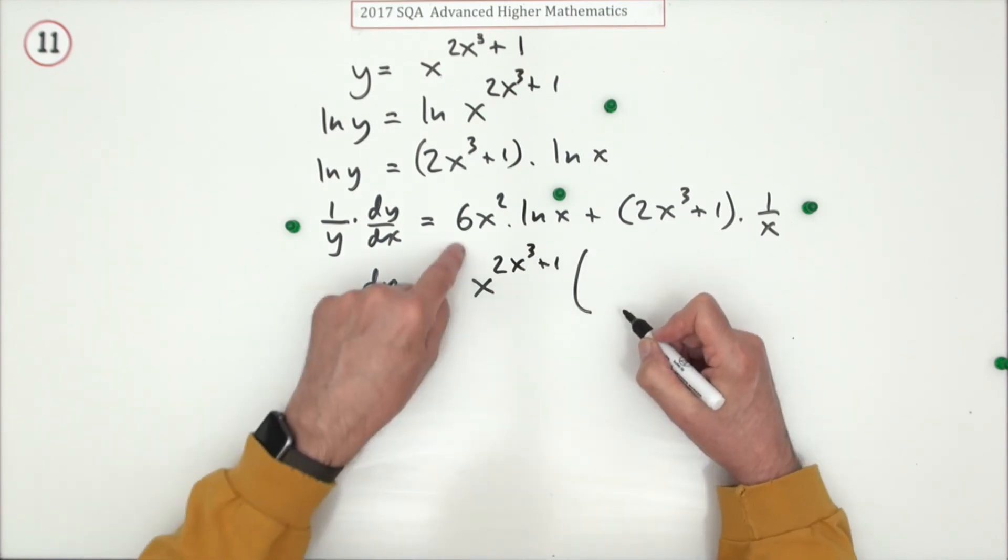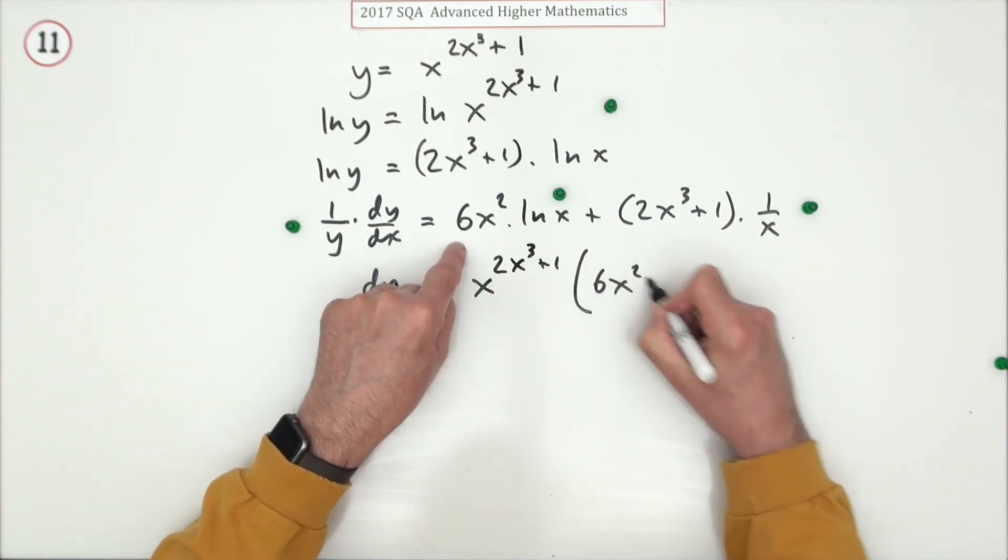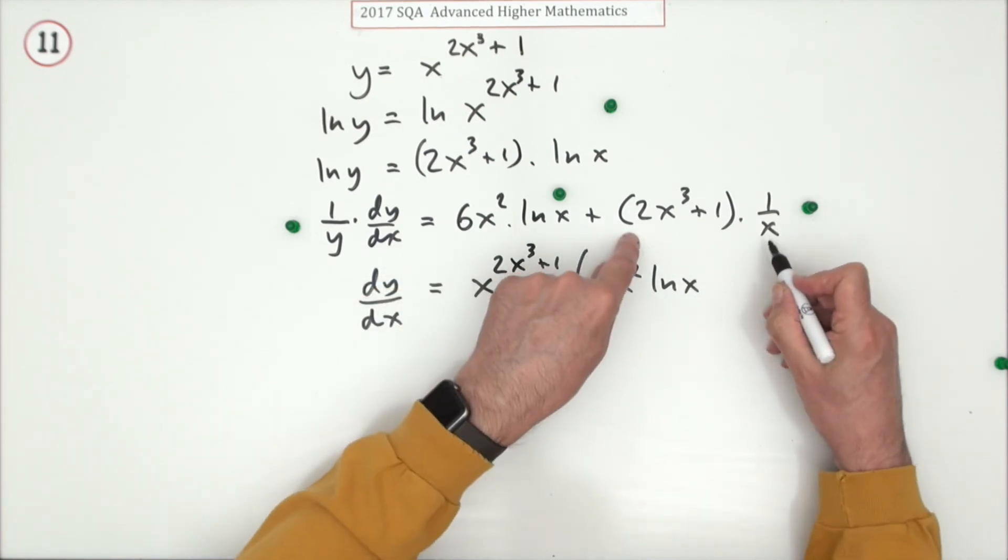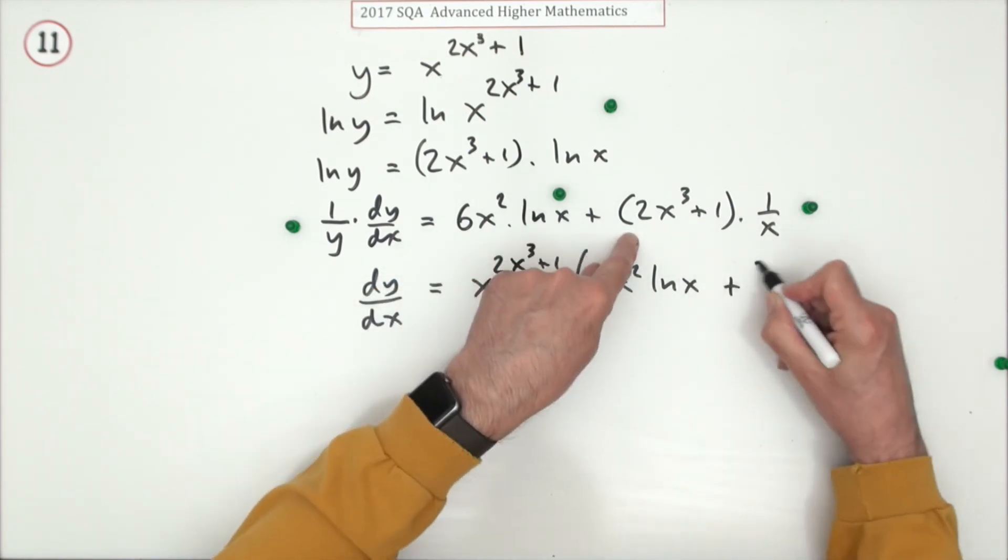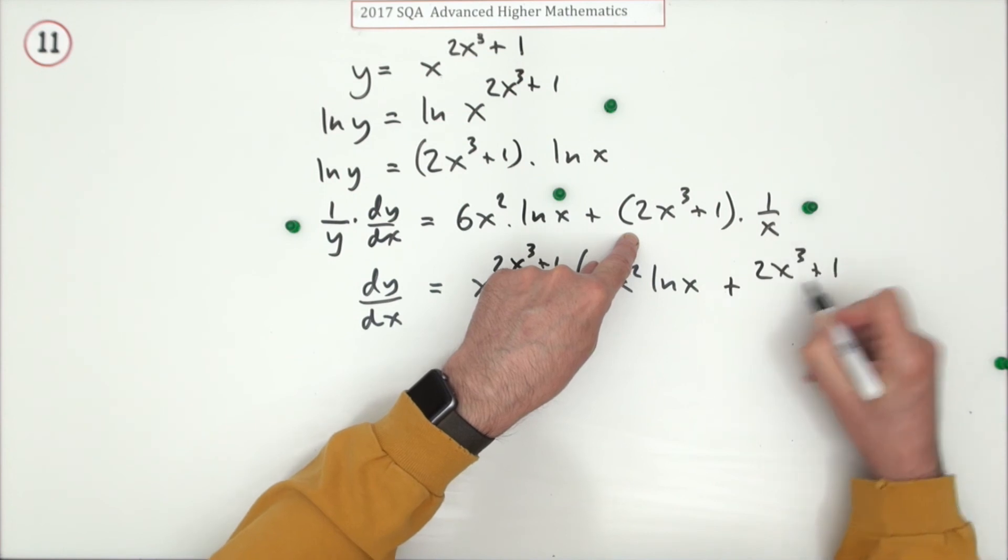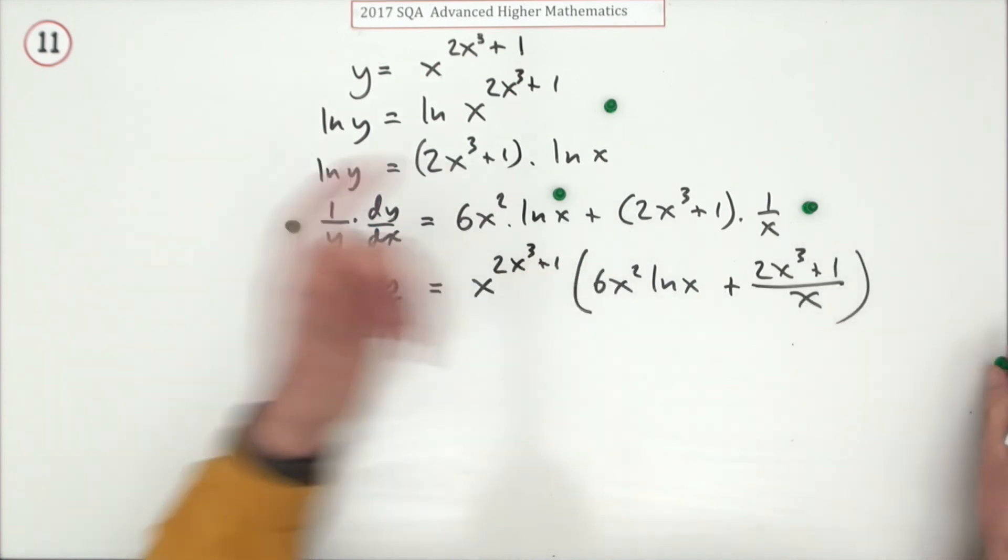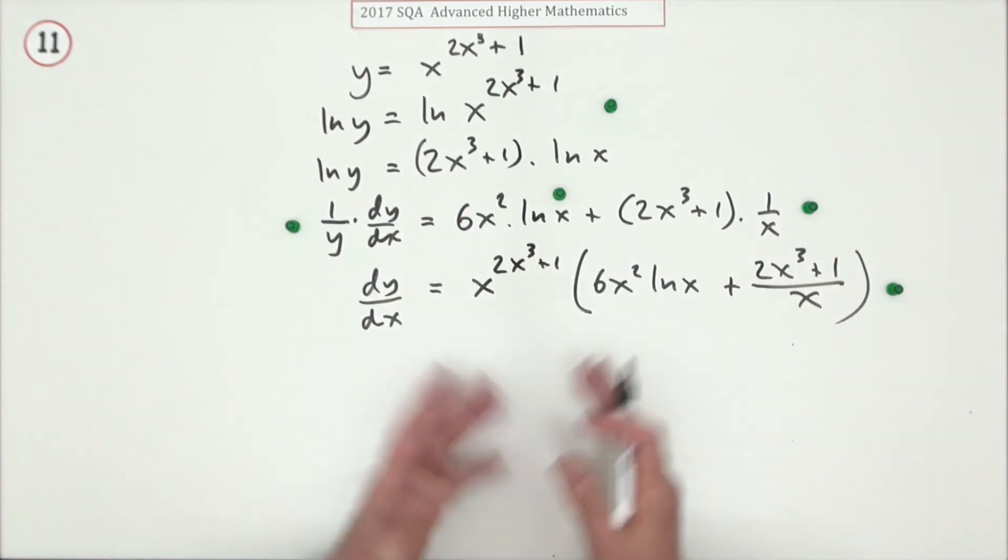Times, not much I can do with that, 6x squared ln x. The only thing I could do with that is put the x underneath it, plus 2x cubed plus 1 all over x. And in fact, that's it. There's five marks.